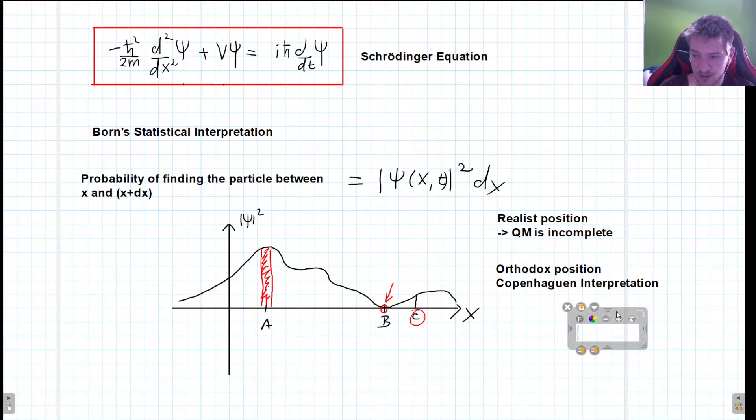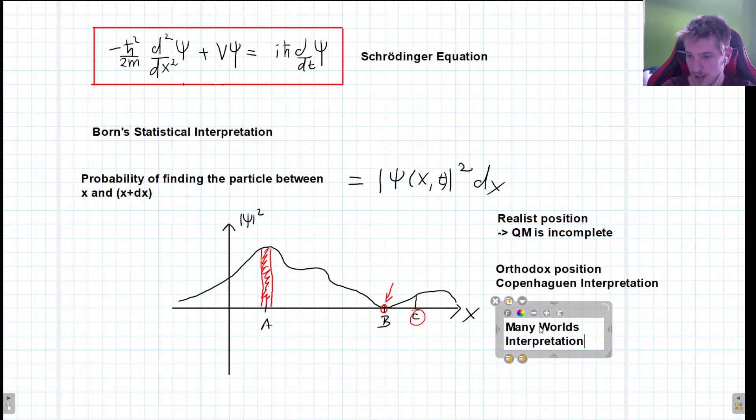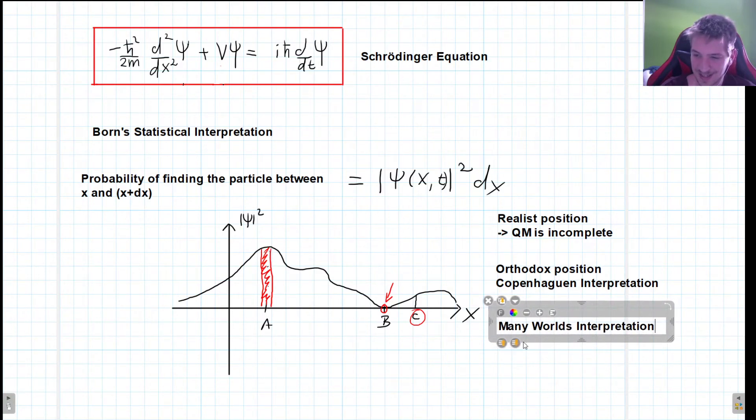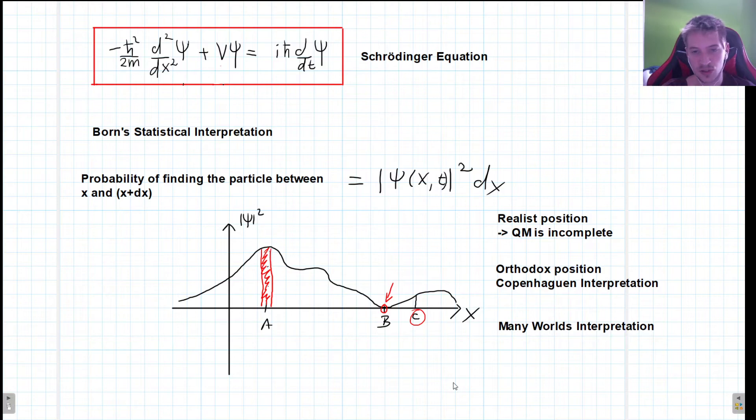Now there are obviously some other possible answers or positions. For example, there's the many worlds interpretation. And this one claims that it's not that a particle just decides where it's going to be measured. It's that every single possible outcome of the experiment occurs and we just happen to live in a world or in a reality, in a universe, in which we detect this outcome.